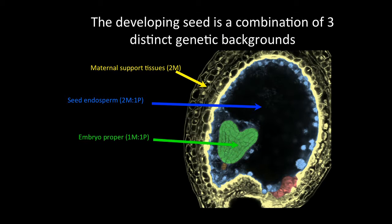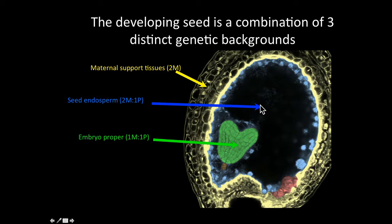It's an interesting genetic puzzle, because if you look back at early development, the seed itself is basically constructed from three different compartments with three different genetic backgrounds. We have the maternal support tissues, which are derived from the mother. We're going to have a double fertilization event - the egg cell being fertilized, giving rise to a one maternal to one paternal diploid structure, which is the embryo proper. Then a second fertilization event gives rise to the triploid endosperm. These things have to coordinate their development, grow, fill that space, and provide nutrients for the embryo.